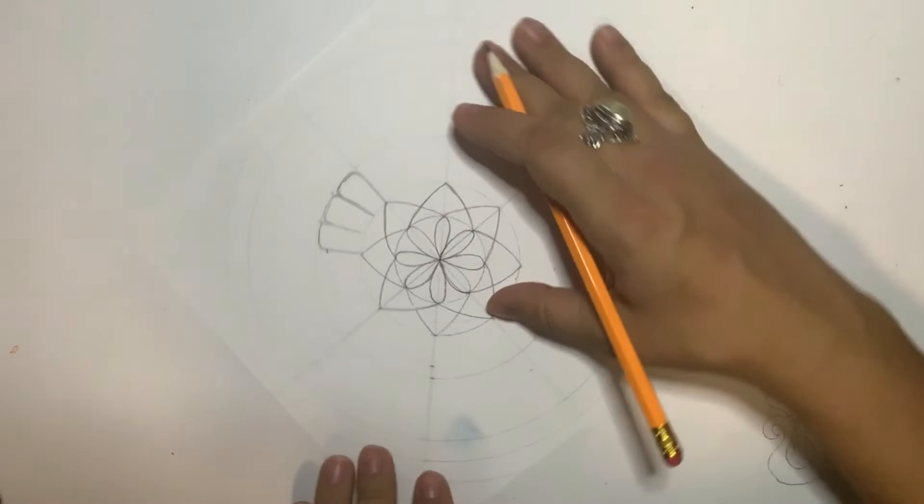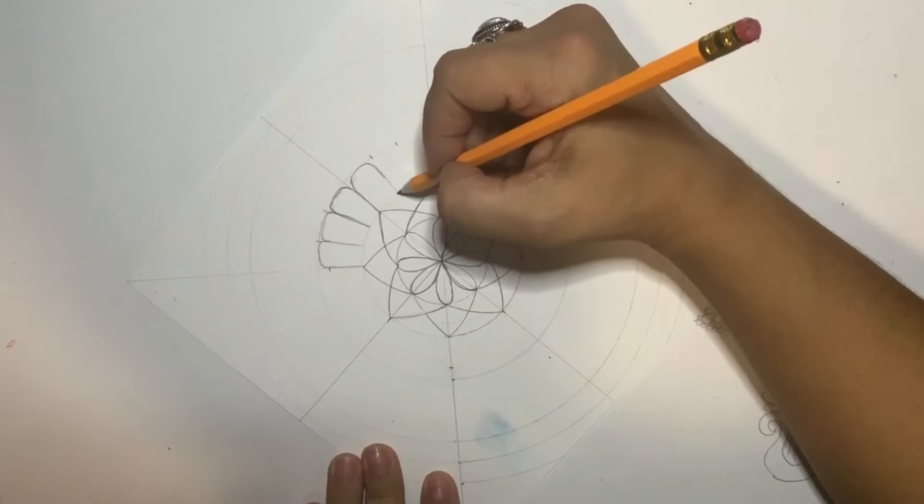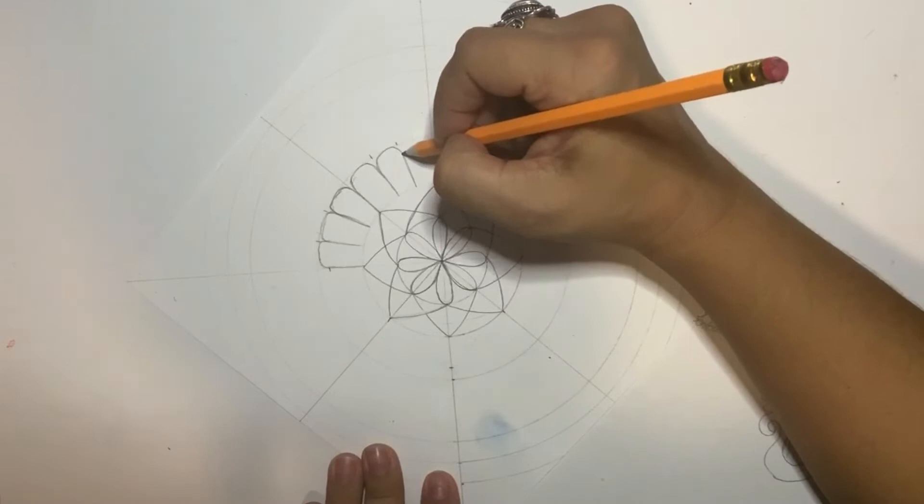Forget about perfection. What matters here is that you're practicing observation, that you are designing, you're balancing right and left hemispheres of the brain, and you have to have fun. So let's keep sketching.